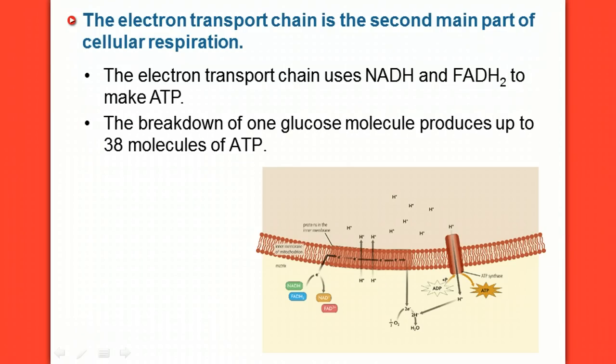So the breakdown of one glucose molecule produces up to 38 molecules of ATP. Pretty impressive.